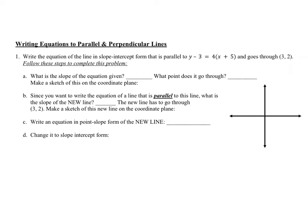When asked to write equations of parallel and perpendicular lines, a question will look like: write the equation of a line in slope-intercept form that is parallel to y minus 3 equals 4 times (x plus 5) and goes through (3, 2). The first step is identifying the slope of the given equation. This equation is in point-slope form, so the slope is 4.